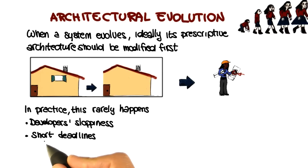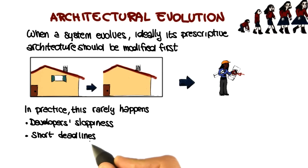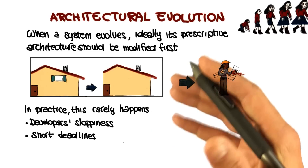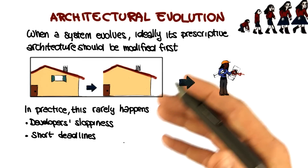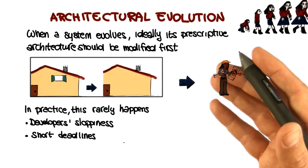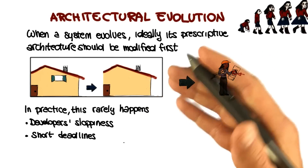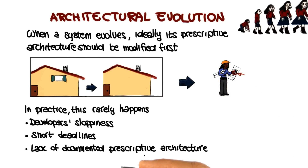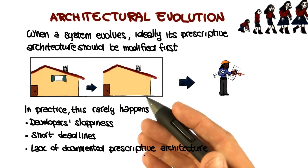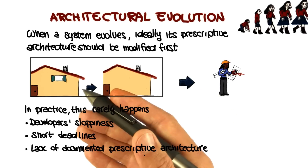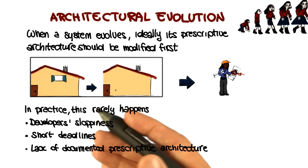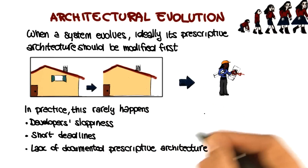In other cases, you do this because of the perception of short deadlines. If you have to do something by this afternoon, you're not going through a formal software architecture review — you just get to it and do it. In some cases, a prescriptive architecture is not even present; there's a lack of documentation, so you cannot modify something that doesn't exist, and you jump directly to the code.